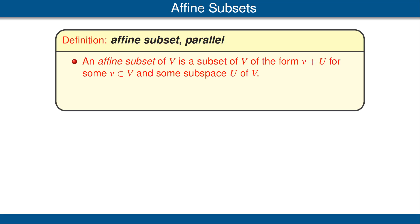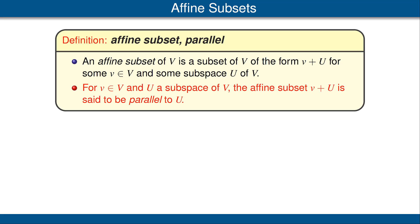An affine subset of our vector space V is defined to be a subset of V of the form of a vector plus some subspace of V. We now define the notion of parallel based upon our last example: if we have a vector in V and a subspace, then the affine subset consisting of the sum of that vector and subspace is said to be parallel to the original subspace.